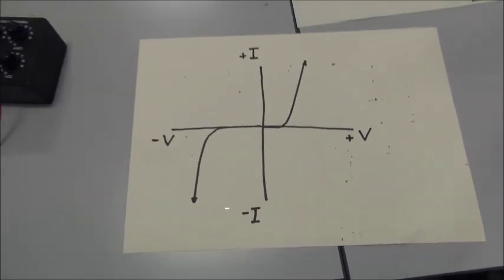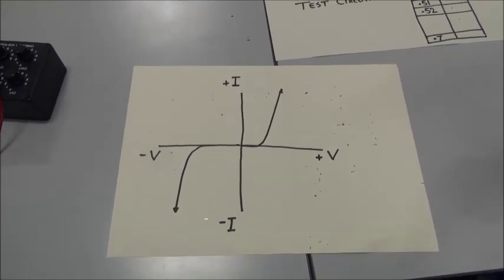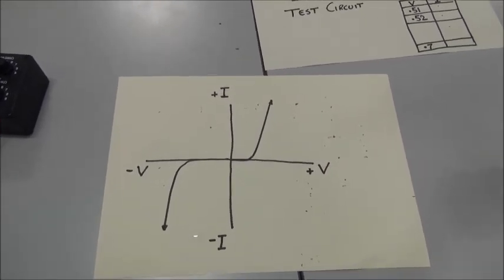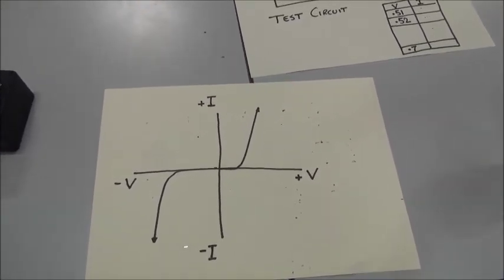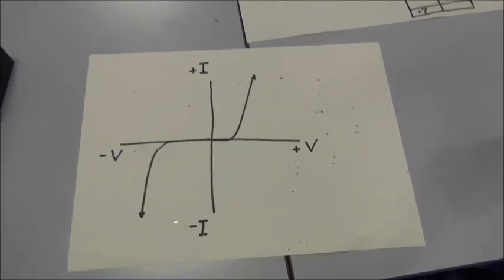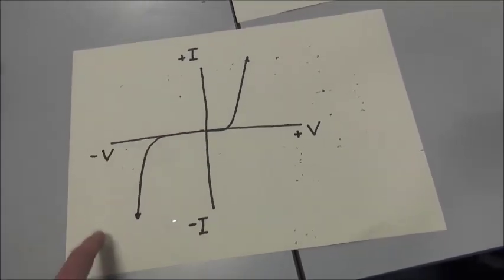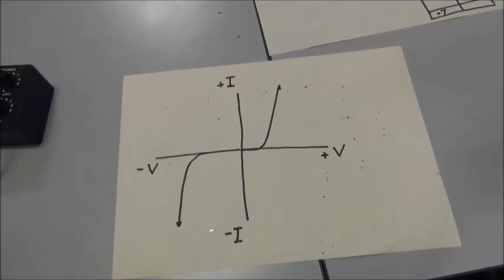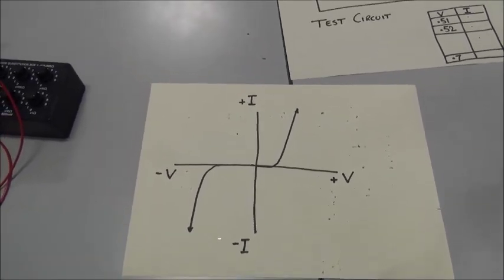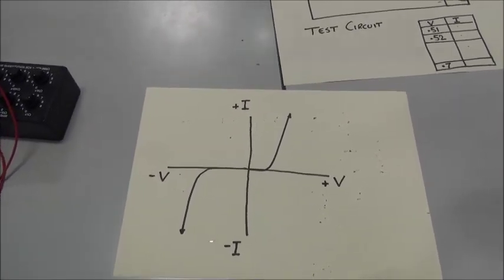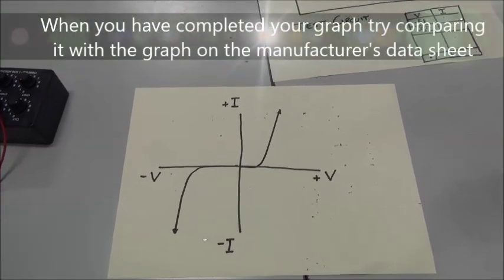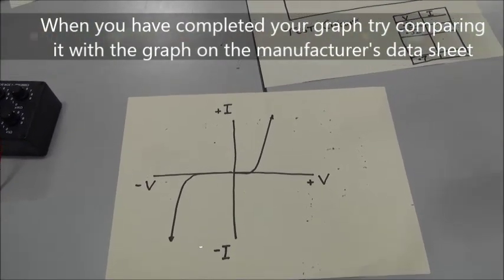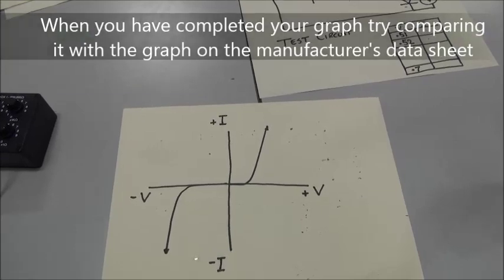But you need to do this same test with another diode, a general purpose diode. And that will have a much higher reverse breakdown voltage. Probably the one you're going to use about 50 volts or so. Now, you can't do that in the lab with our power supply. So you're going to need to do the reverse bias for the general purpose diode in Multisim.